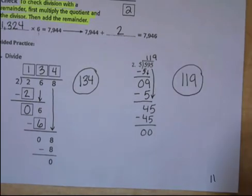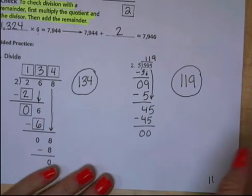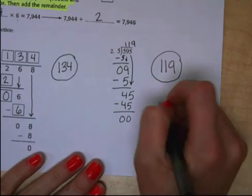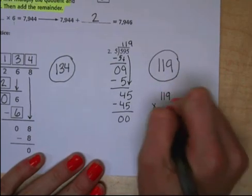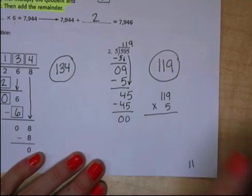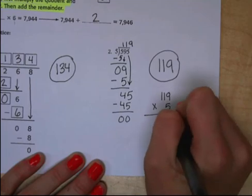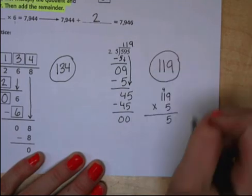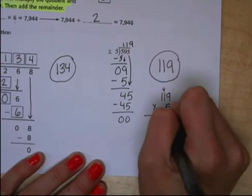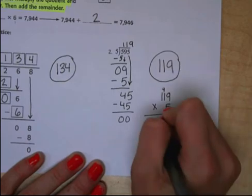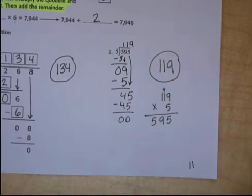Another important step I forgot is to check. So let's go ahead and check number 2 to make sure we did it correctly. 119 times 5. 5 times 9 is 45, carry the 4. 5 times 1 is 5 plus 4 is 9. 5 times 1 is 5. Looks like we did guided practice number 2 correctly.